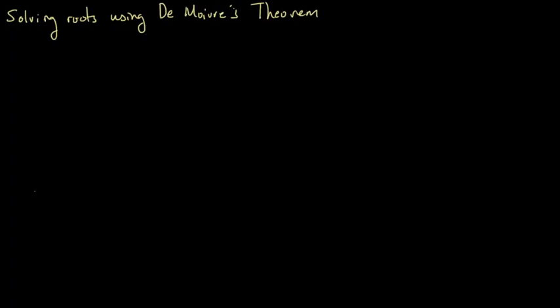So for example, if I have z equals 3 plus 4i, by now you should be able to convert that into the polar form: z equals 5 cis 0.927 radians.